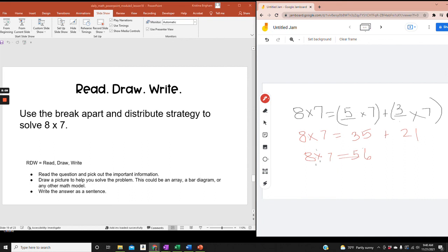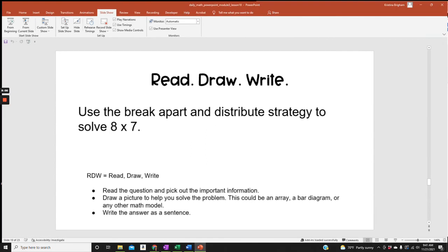Let's look back at our question. Use the break apart and distribute strategy to solve 8 times 7. So for my sentence, I'll just say that 8 times 7 equals 56 because 5 times 7 plus 3 times 7 equals 35 plus 21. So I've shown how I've reached my answer and I've described it, so I've completed the read-draw-write question. Let's check our work.